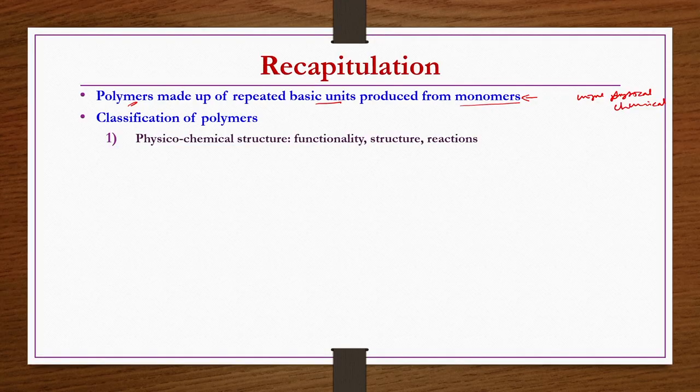Classification of polymers is very difficult because of so many interacting features among different types of polymers. However, four different broad ways are commonly used to classify polymers. The first is physico-chemical structure. Based on functionality, whether the monomer is bifunctional, trifunctional, or polyfunctional, polymers may be produced accordingly. Based on physical structure, you can have linear polymers, cross-linked polymers, and branched chain polymers.